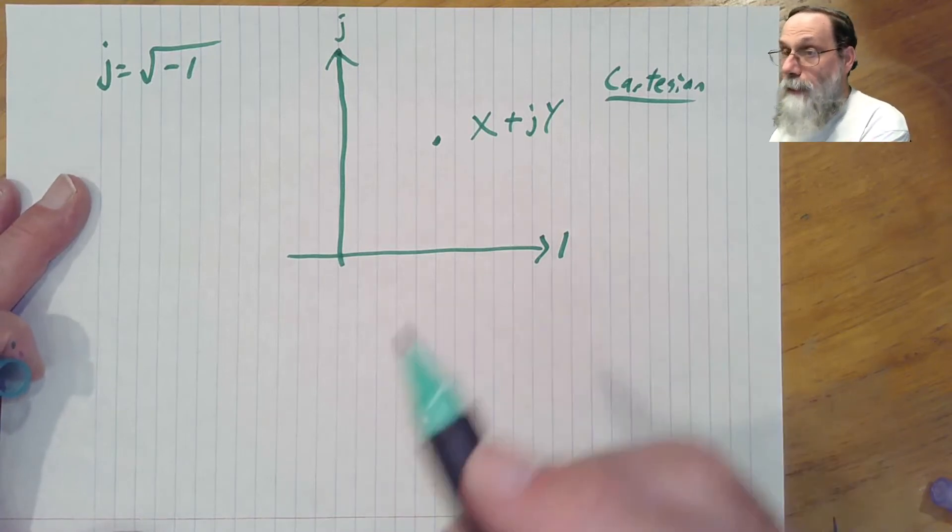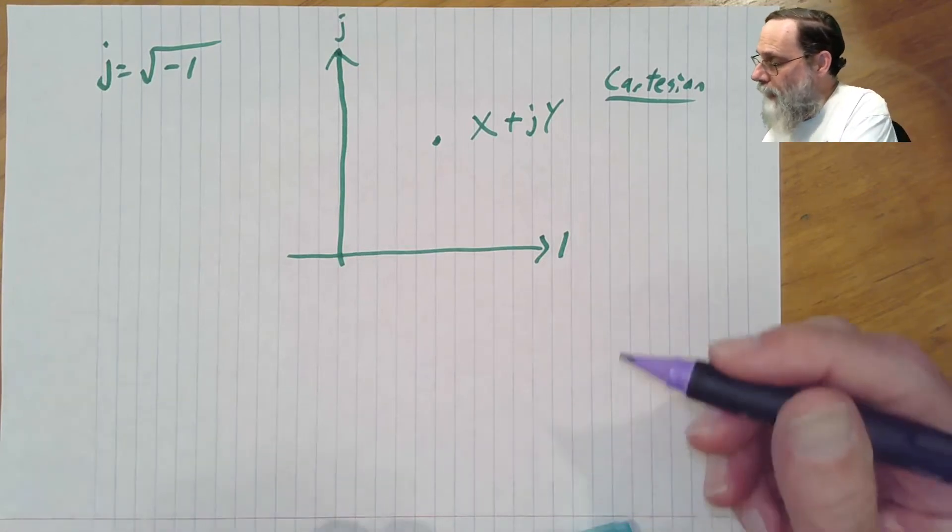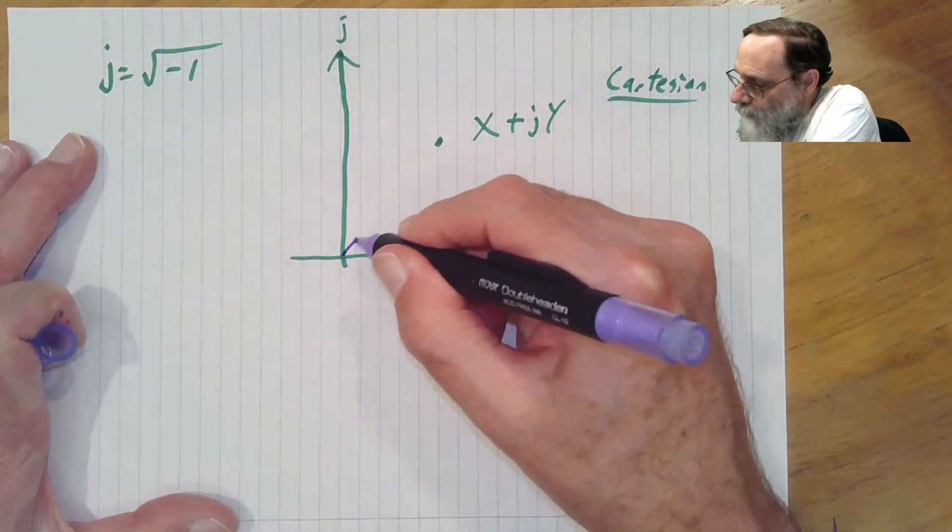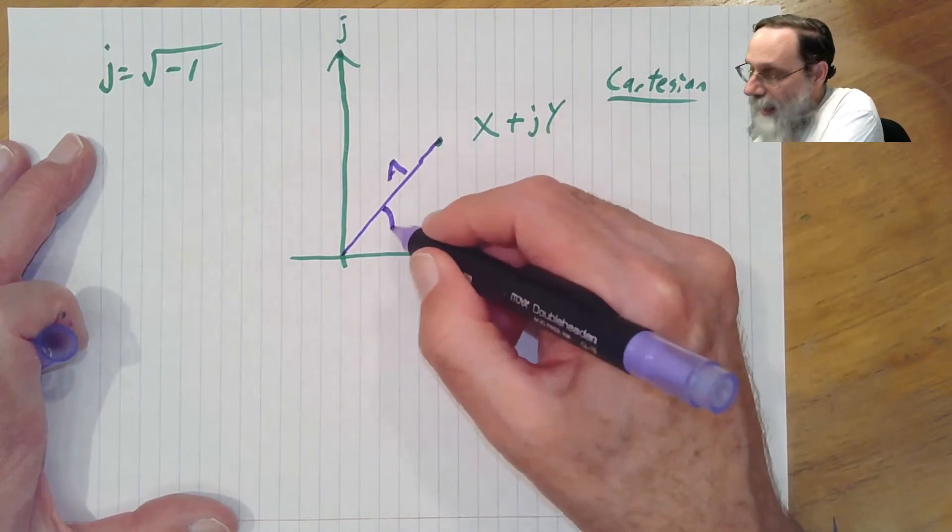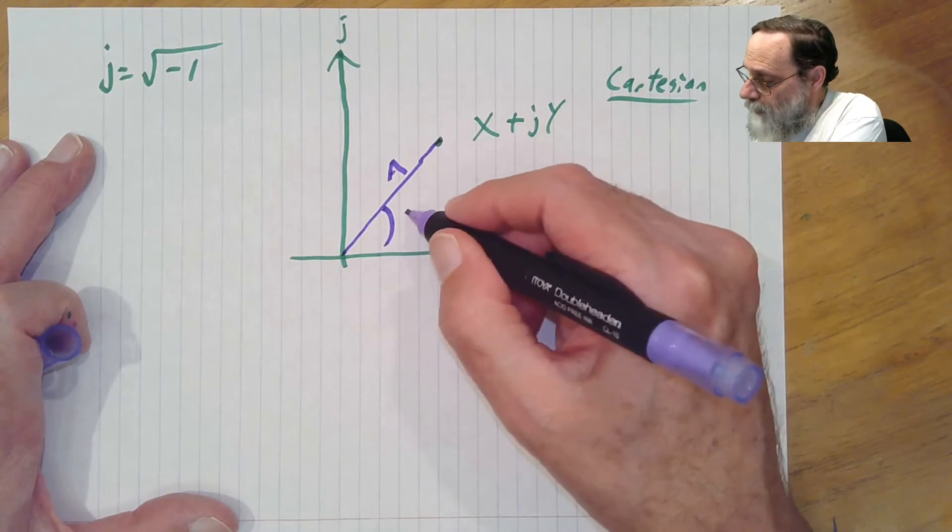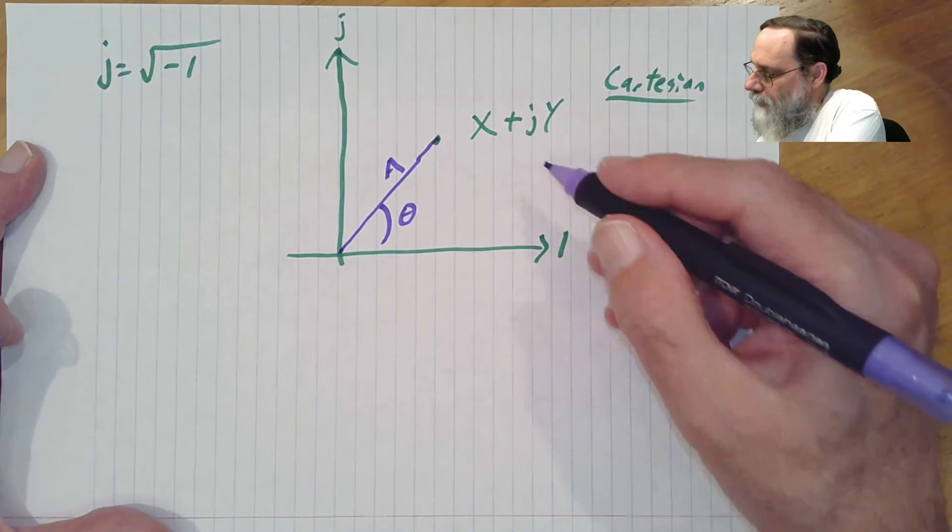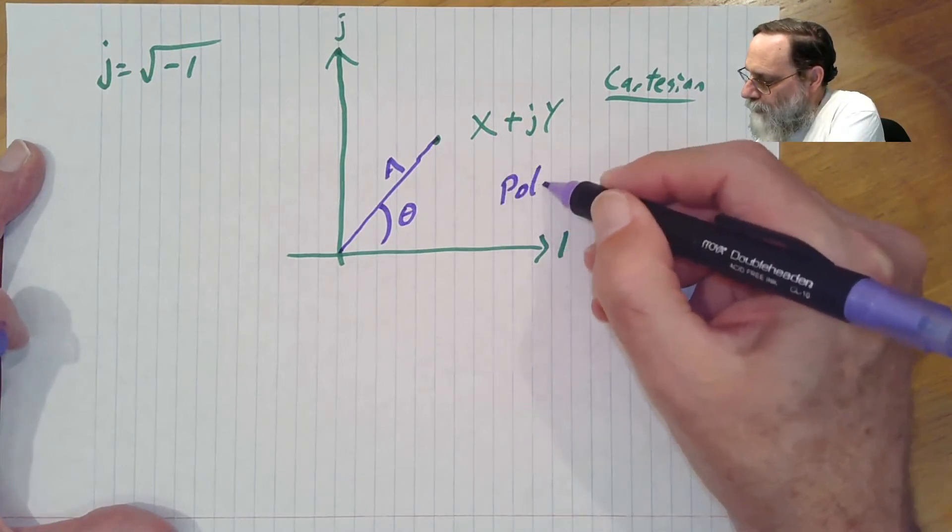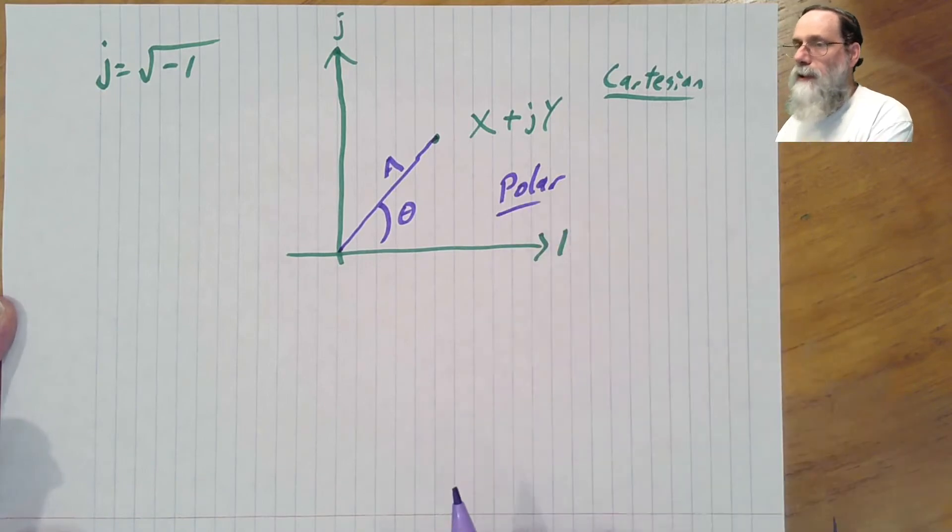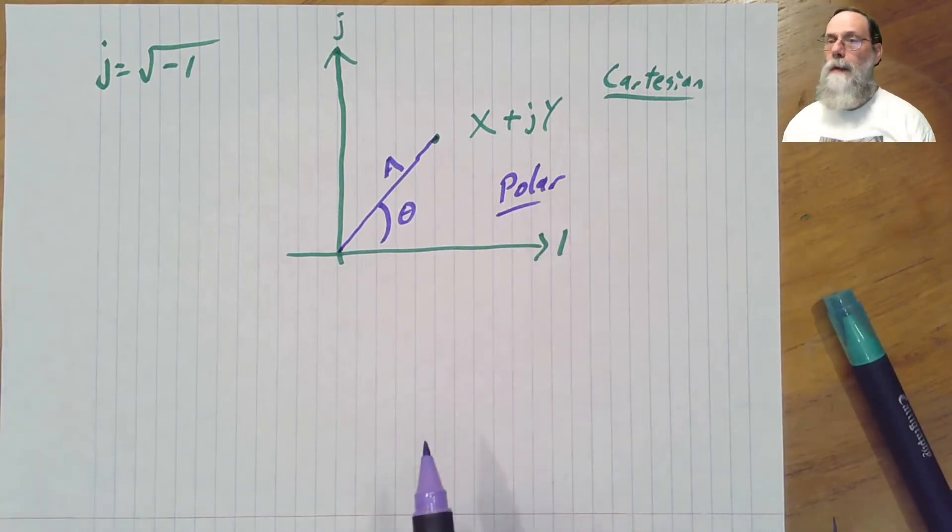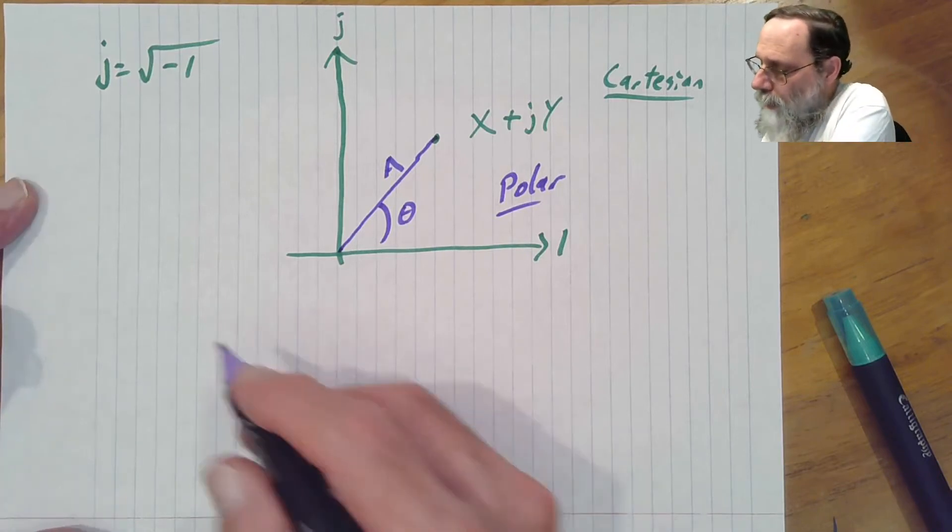There is another way to represent this number. And that is, we can talk about how far it is from zero, and what's the angle that we make with respect to the real axis. This is known as polar notation. And there's an interesting relationship between polar notation and Cartesian notation, known as Euler's formula.